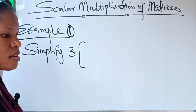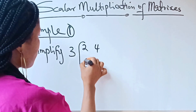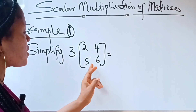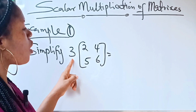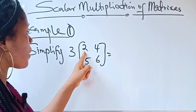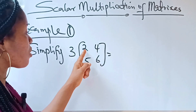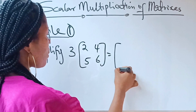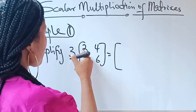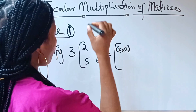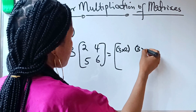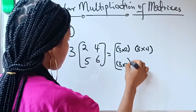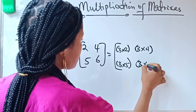Simplify 3 times the matrix [2, 4; 5, 6]. When you have something like this, this is a matrix and 3 is a scalar — a whole number. All you need to do is use this number to multiply the respective elements inside the matrix. So we open our brackets: 3×2, 3×4, 3×5, 3×6.